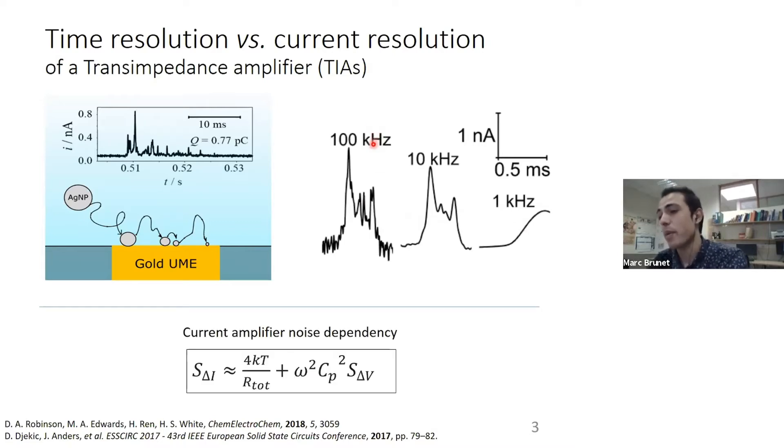Nevertheless, this is problematic because amplifier bandwidth and amplifier noise are intimately linked. Normally with efforts to increase the bandwidth, the current noise is also increased. Here is an equation that tells about the current amplifier dependency on noise. The output noise from the current amplifier has a term that depends on the bandwidth we are using.